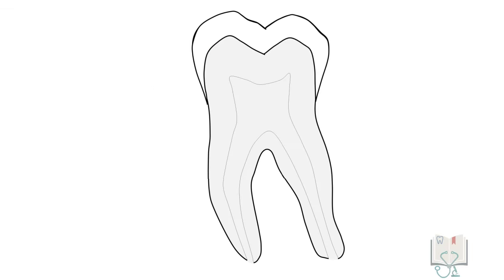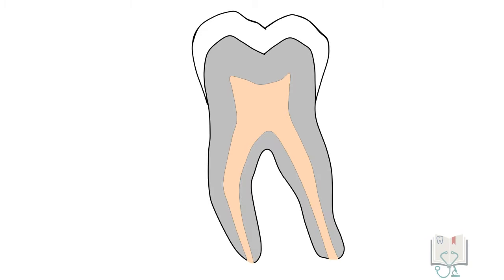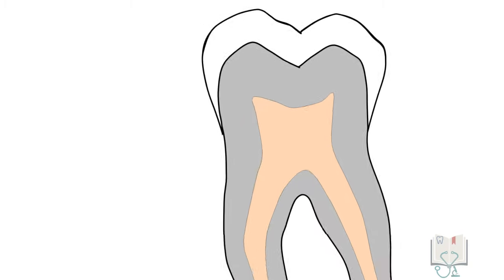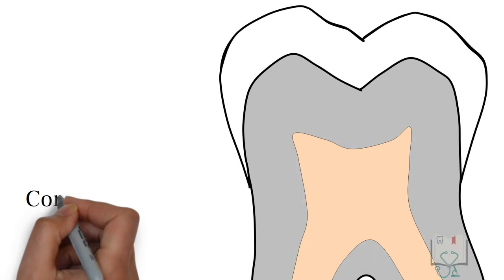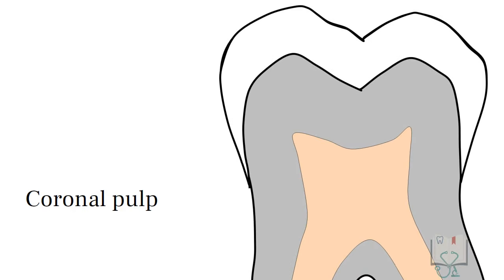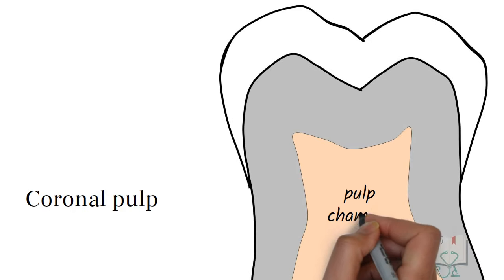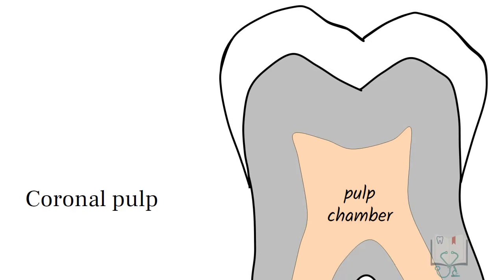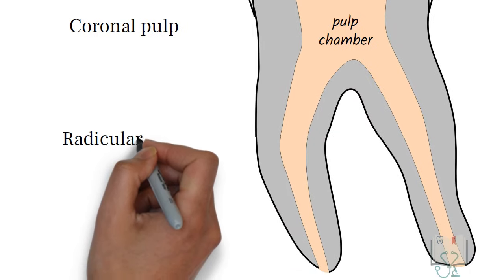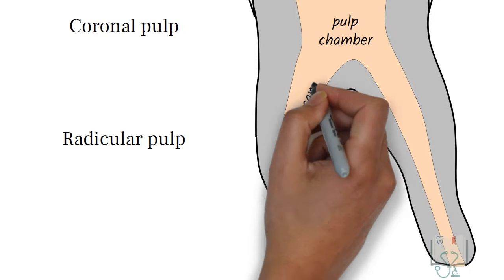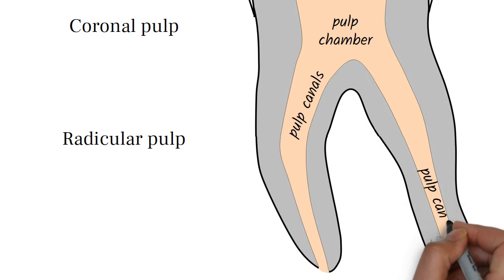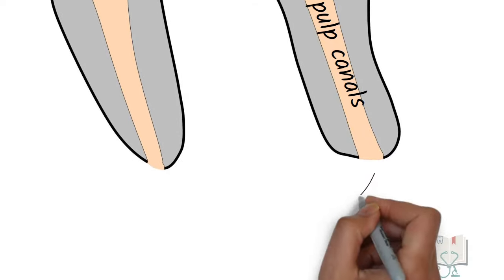The dental pulp is the centrally placed soft connective tissue which is surrounded by dentine from all sides. It can be divided into two parts: the part within the crown, called coronal pulp or the pulp chamber, and the part which lies in the root, called radicular pulp or the pulp canals. It communicates with the outer tissues by the apical foramen.